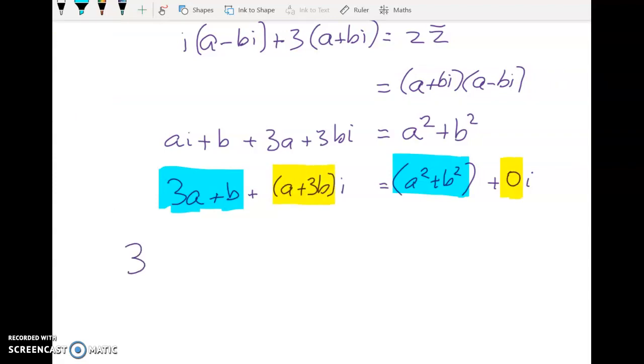And you can see that that's going to be the easiest place to start. So we've got 3a plus b is equal to a squared plus b squared and we've got a plus 3b is equal to 0. So I'm going to work here and then substitute back into this one.